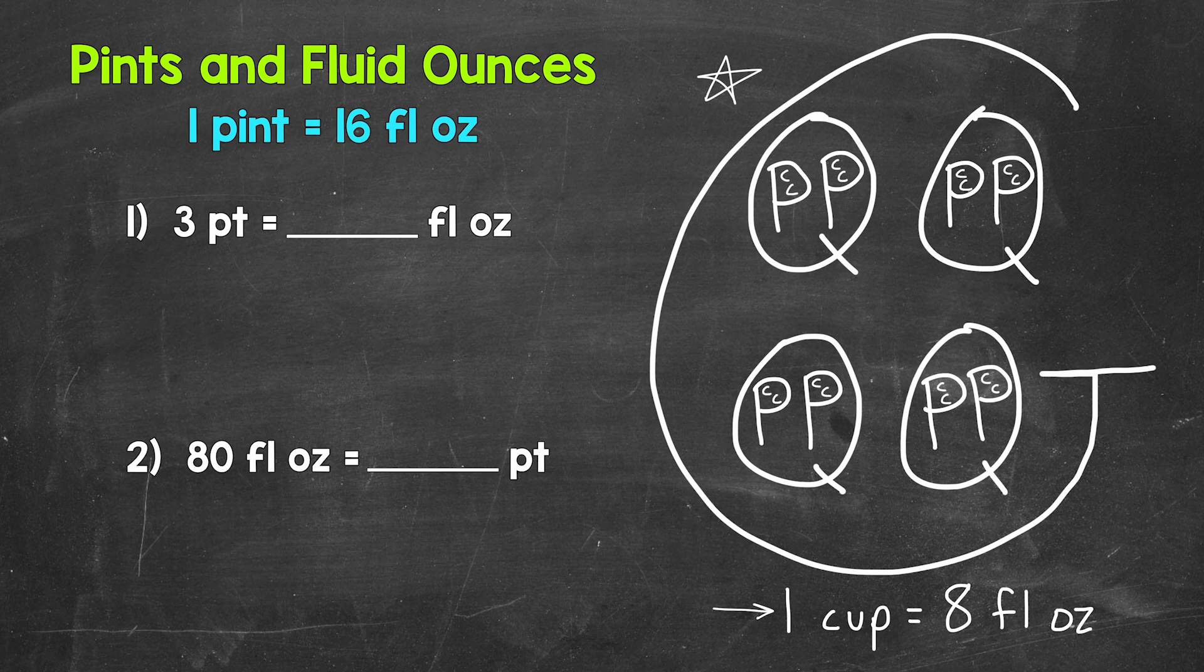Let's jump into a couple of basic conversions here, where we will go from pints to fluid ounces and fluid ounces to pints. Starting with number one, where we have three pints equals how many fluid ounces? Well, each pint equals 16 fluid ounces.